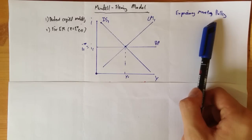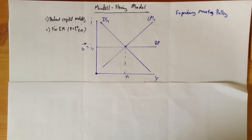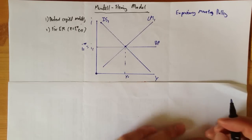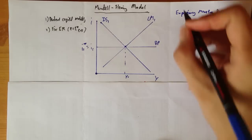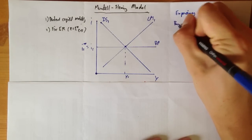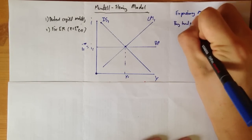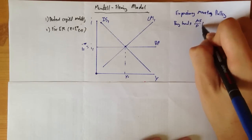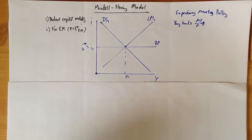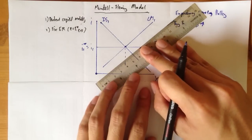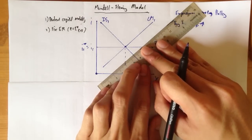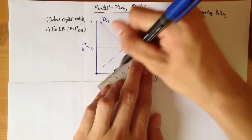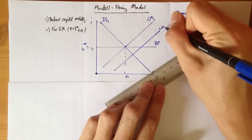First of all I'll start with the expansionary monetary policy. We're going to assume that the government buys bonds. We know that the government buying bonds is going to increase the money supply, and this will cause our LM to shift down — that is, a rightward shift of the LM curve — because there's an increase in money supply in the economy.